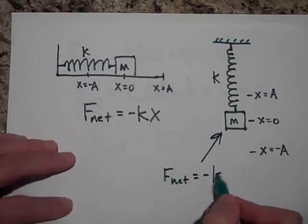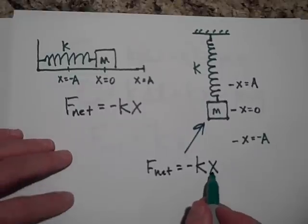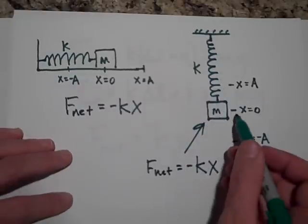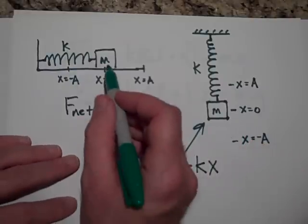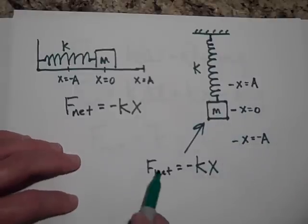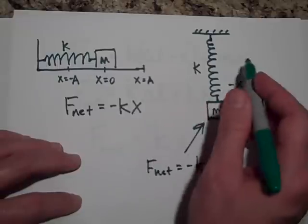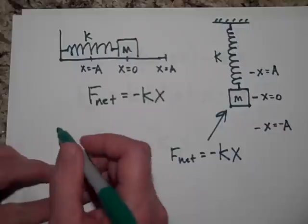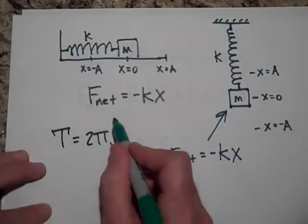is equal to negative kx, where x is not how much the spring is stretched. x is how far you pull it from equilibrium. This x is how far this is pulled from equilibrium, this x is how far it's pulled from equilibrium. If you want to know the period of this system, it's the same as that. They both have the same period: two pi times the square root of m over k.